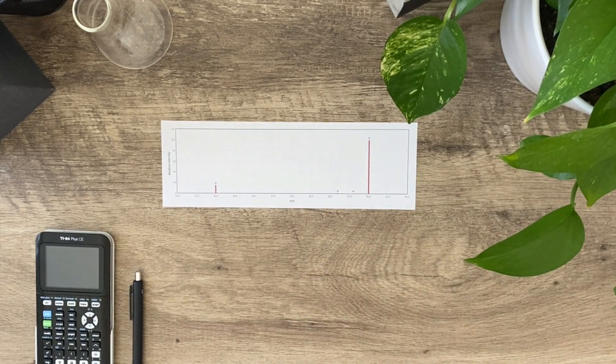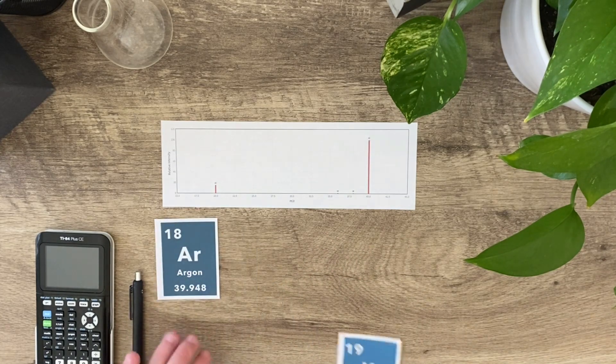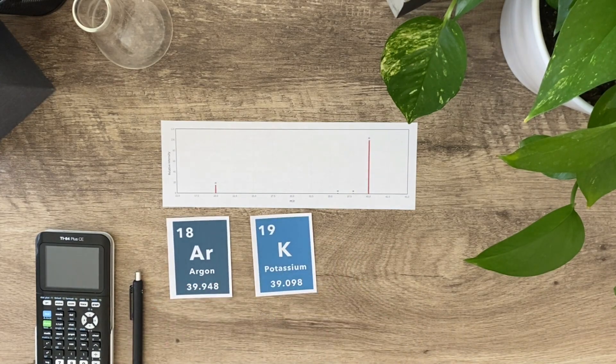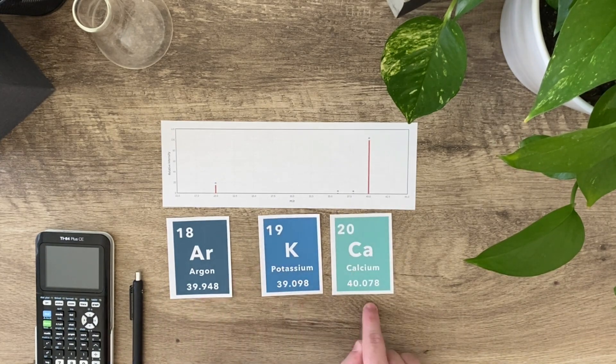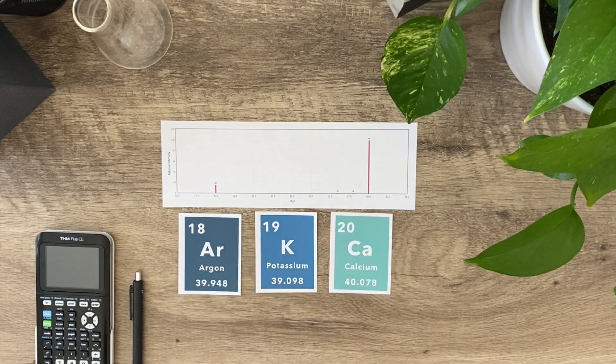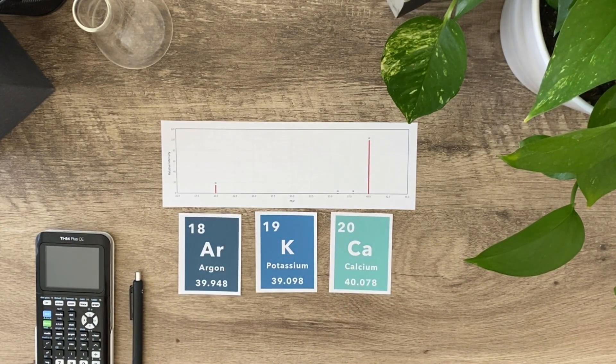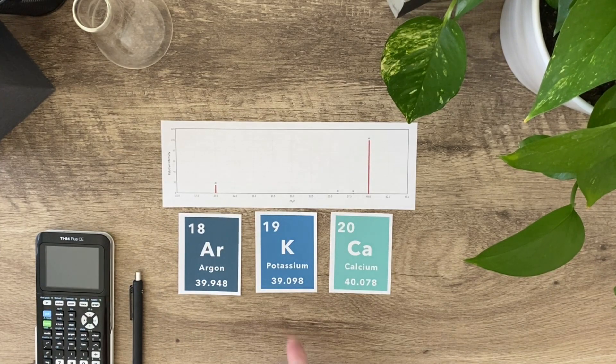I pulled the closest elements on the periodic table that are close to 40. Our options are: this element could be argon, it could be potassium, or it might be calcium, because all of their average atomic masses are really close to that 39-40 range. Now the question is, we need to be able to eliminate atoms.